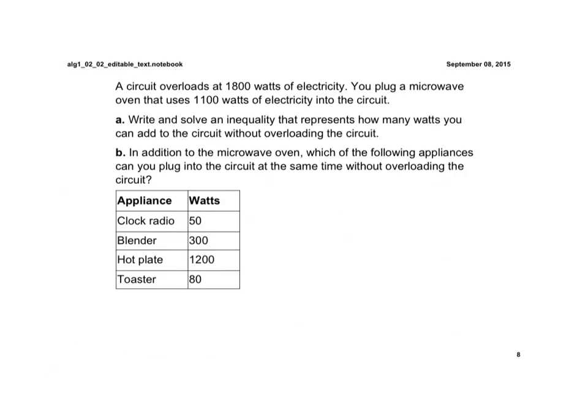All right, and then this last one is just a word problem. So a circuit overloads at 1,800 watts of electricity. You plug a microwave oven that uses 1,100 watts of electricity in the circuit.